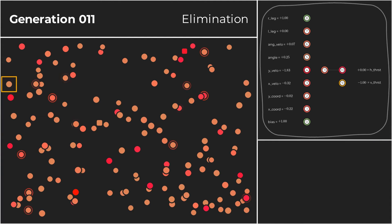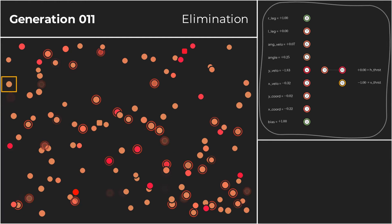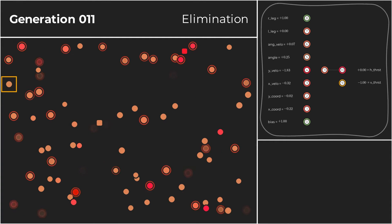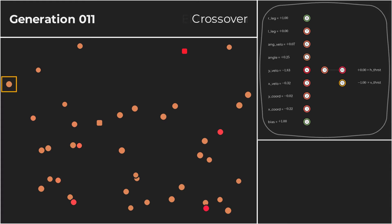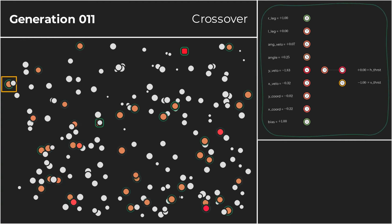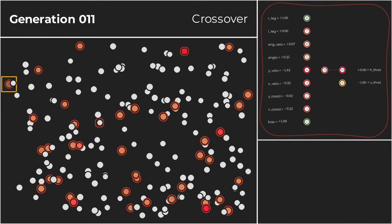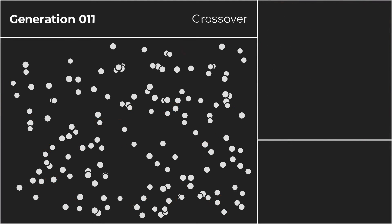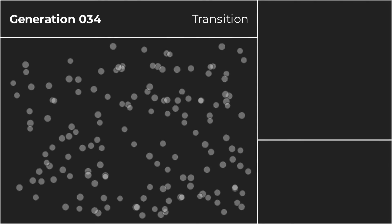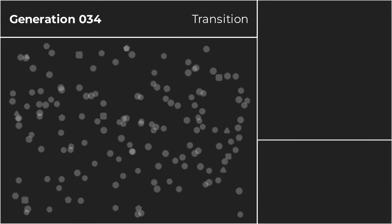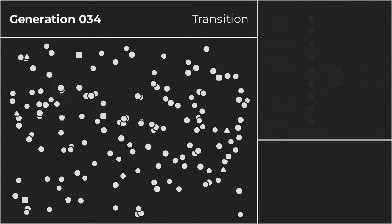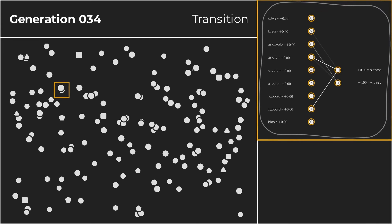To protect topological innovation, the NEAT algorithm ensures that new species are not eliminated prematurely. Let us now jump to generation 34, where another milestone is achieved. This generation is particularly interesting, because it is the first time that one of the individuals has managed to score a positive fitness value.